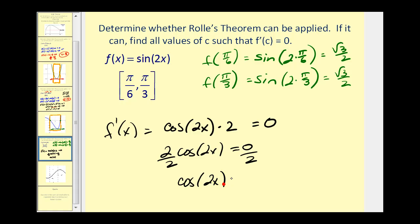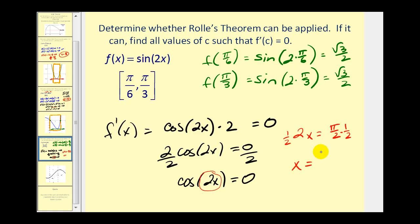We want to know when two cosine of two x equals zero, so we divide both sides by two. The cosine function equals zero at pi over two radians. Since we need our angle two x to equal pi over two, we set two x equal to pi over two and multiply both sides by one half: x equals pi over four radians. So the value of c is pi over four radians — that's where the derivative equals zero.